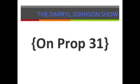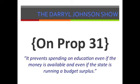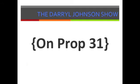I also thought it was funny when the 'no on Prop 31' campaign said it prevents spending on education even if the state is running a budget surplus. A budget surplus in California? But I do like that the legislature would now make two-year budgets — that will keep them from passing short-sighted budgets with tricks that pass debt and unpopular decisions on to the next year. All that fighting over the state budget will only happen every other year rather than every year.